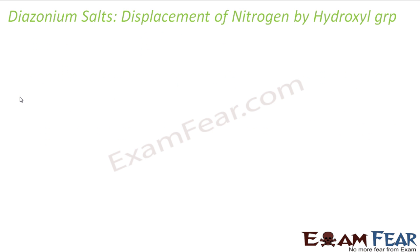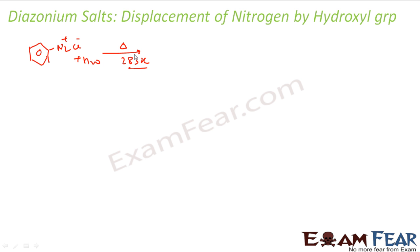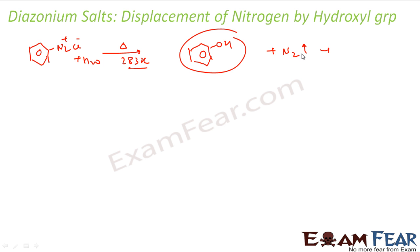Displacement of nitrogen by hydroxyl: if you increase the temperature to around 283 K — not at very high temperature, almost room temperature — what happens is the diazonium salt gets hydrolyzed to phenol. Nitrogen gas comes off, and HNCl reacts to give HCl. So the final product you get is phenol. It is a pretty easy reaction since the diazonium salt is unstable.